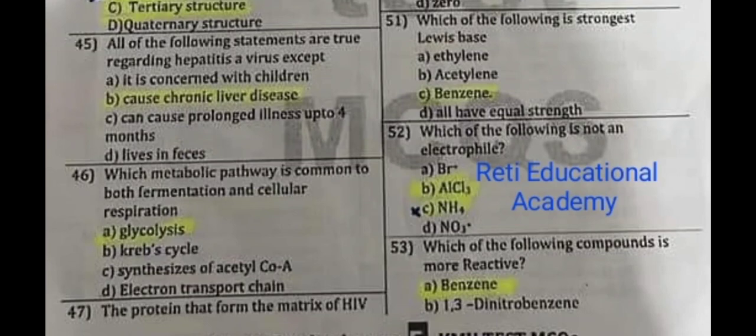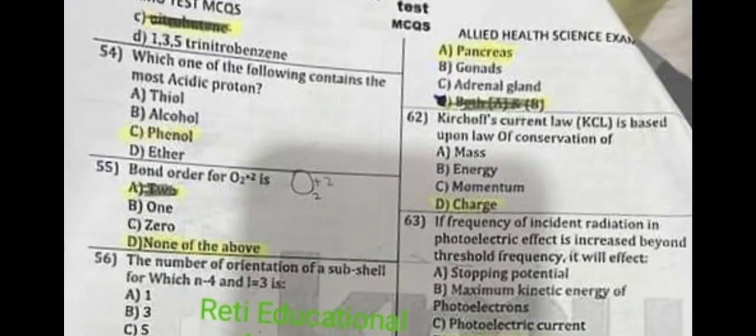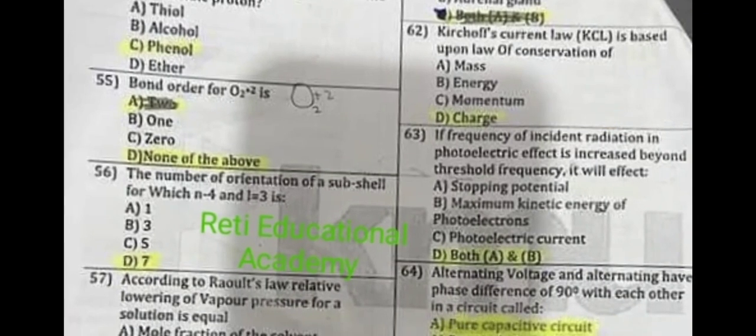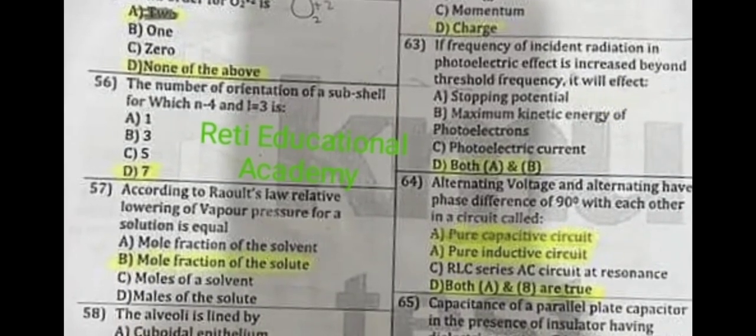Question number 53: Which one of the following compound is more reactive? The correct answer is benzene. Question number 54: Which one of the following contains the most acidic protons? The correct answer is phenol. Question number 55: Bond order for O₂⁺² is — the correct answer is none of the above. Question number 56: The number of orientations of a subshell for which n=4 and l=3 is 7.